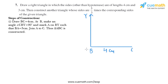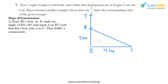Now in the next step we need to put the compass at B and we need to measure the opening as 3 centimeter. We need to draw an arc like this and the point of intersection we will name it as A. Then we need to join A to C, so we'll draw a line to join A and C.